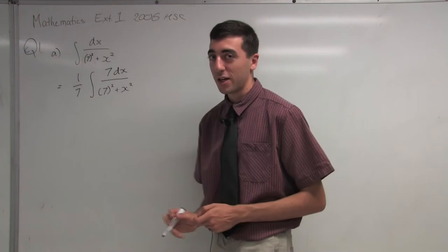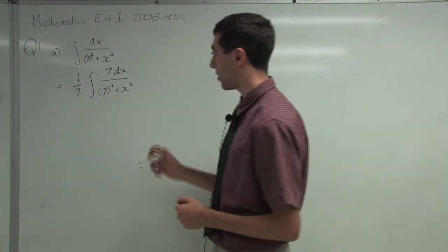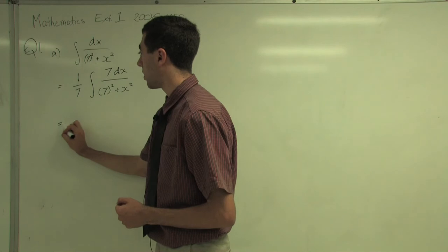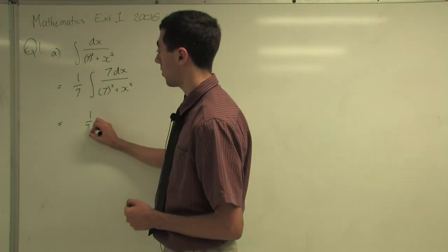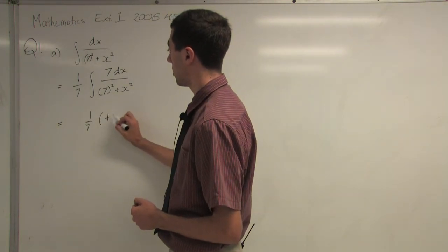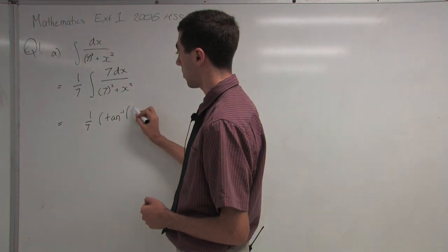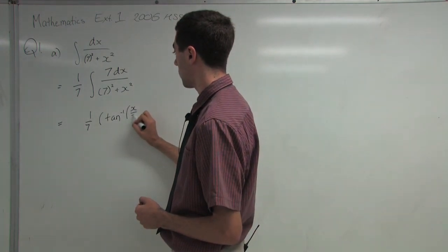So now, once you've done that, it's just a simple standard integral. It is tan inverse, so this will equal 1 over 7, and then that will be tan inverse x over 7.